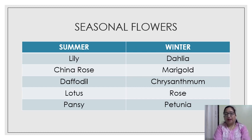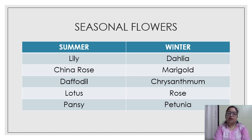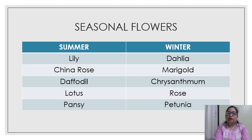Here I have given you a table in which you can see various flowers. Flowers blooming in summers include lily, china rose, daffodils, lotus, and pansy. In winters you can see dahlia, marigold, chrysanthemum, rose, and petunia. Some flowers bloom in summers and some in winters, so flowers which bloom in different seasons are known as seasonal flowers.